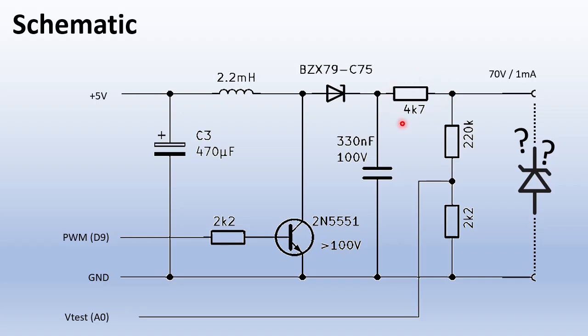The 4K7 resistor is to limit the current if the voltage goes lower than 5 volts. This is a boost converter and it cannot reduce the voltage. That means that if you go below 5 volt on the output, you will short the 5 volt supply from the Arduino. The capacitor needs to be a high voltage type, at least 100 volts.